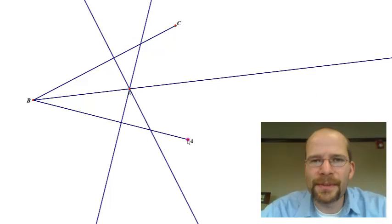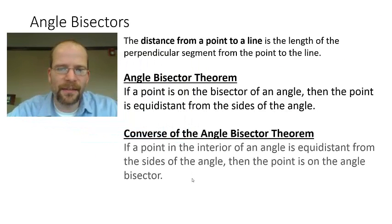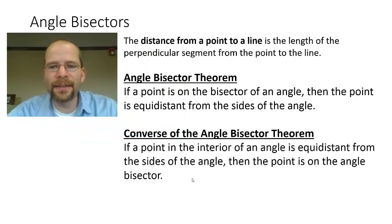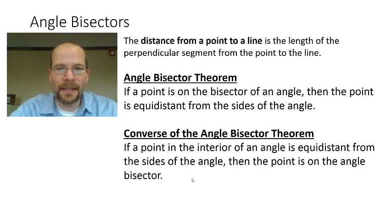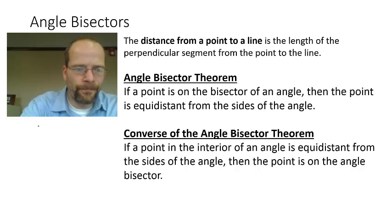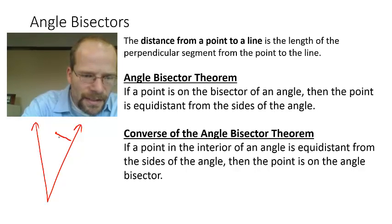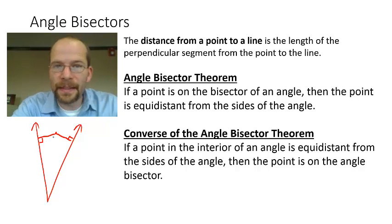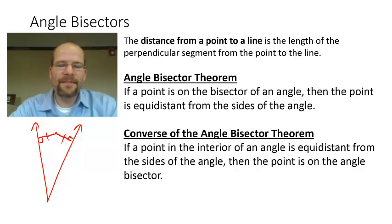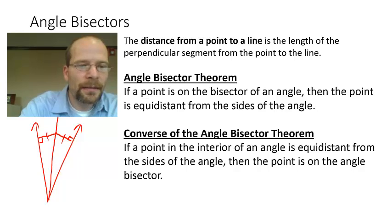So any point on an angle bisector is always equidistant from the sides of the angle. There's a converse to the angle bisector theorem: if there is a point in the interior of an angle that is equidistant from the sides of the angle, then it must lie on the angle bisector. Suppose we had an angle and a point that is equidistant from the sides — measured with perpendicular segments. If that's the case, then we can be absolutely certain that that point lies on the angle bisector.